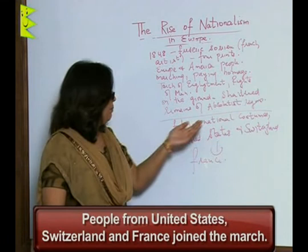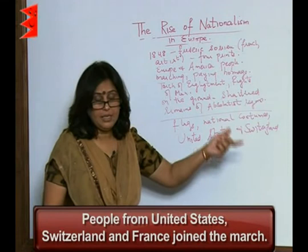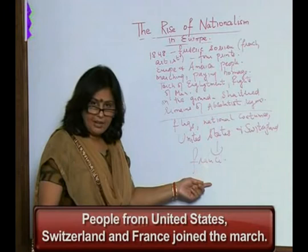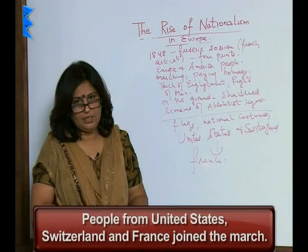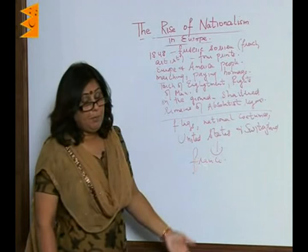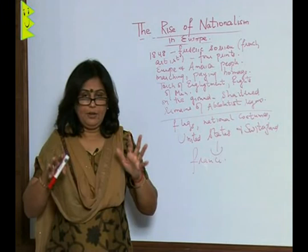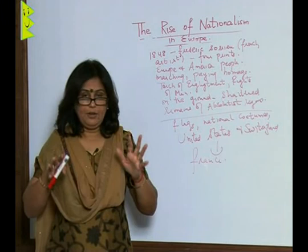The people who led this march were the people of the United States and Switzerland, because they had already turned into nation states, followed by France, which had just become free and become a nation state. This French artist clearly depicted that the people of France and Europe were happy because they had got liberation from the past torture of the autocratic rule of the governments and rulers they had.